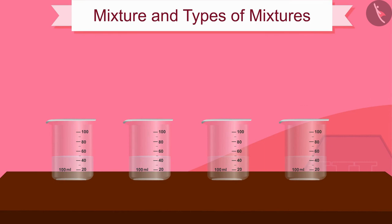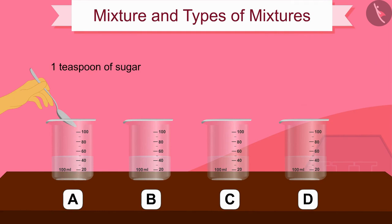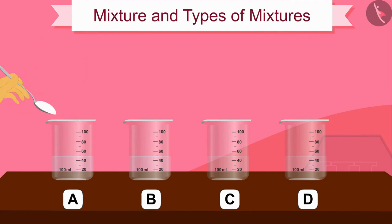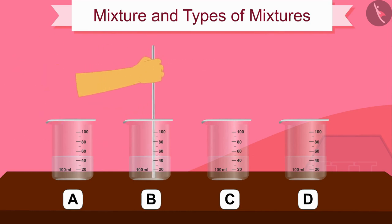Suppose we name these four beakers as A, B, C, and D. Now dissolve one teaspoon of sugar in beaker A. Tell your friend to dissolve three teaspoons of sugar in beaker B.